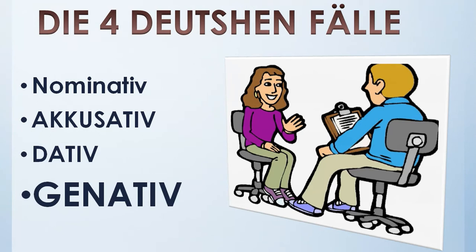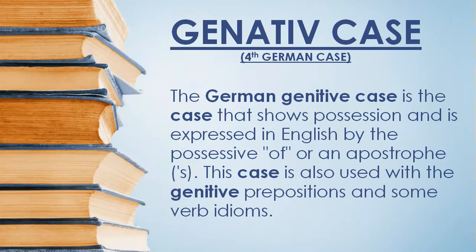Today we will be learning about the Genitive case. Genitive is the fourth German case. In this case, we express possession — for example, in English we use apostrophe-s; in German we replace that and use something else in the Genitive case. This case is also used with Genitive prepositions and some verb idioms, which you will learn in upcoming videos.